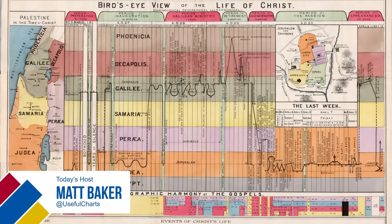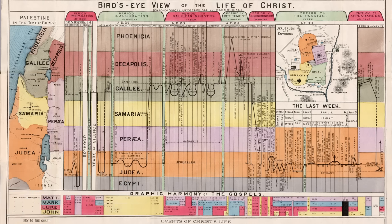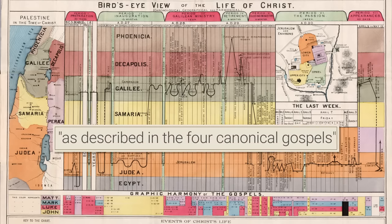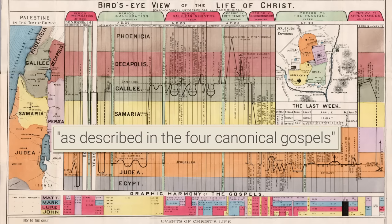Hi, this is Matt Baker. Today, I'm going to go through a timeline of the life of Jesus as described in the four canonical gospels. Since this is an academic channel and not a faith-based channel, I really want to emphasize that last part — as described in the four canonical gospels. In this video, I'm not going to be discussing the historicity of any of the events. I'm simply going to be going through the story as the Bible tells it.